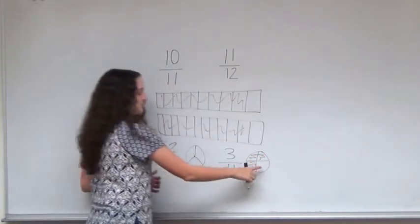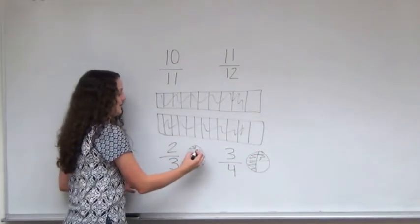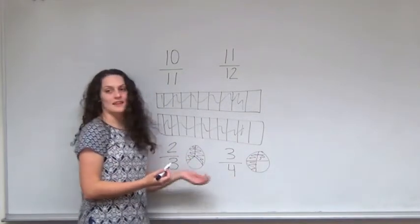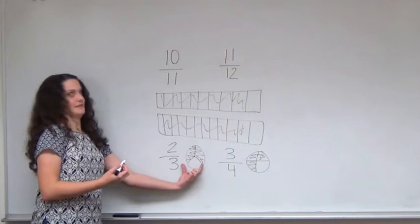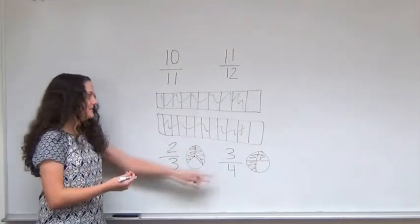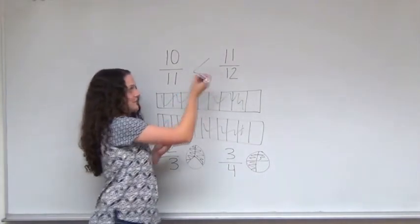Oh wait, the fact that the pieces are smaller means more of this is filled in than this one. A third is left over here, where only a fourth is left over here. And that's how I was able to link it up here, that that one's greater.